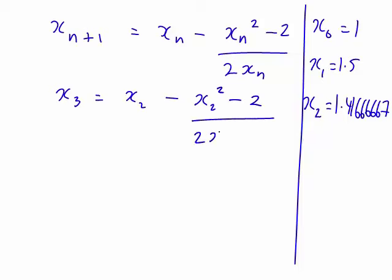So, I'll leave you to substitute in 1.41666667 into this. You should end up with x₃ = 1.41421569, if we're staying correct to 8 decimal places for the moment.